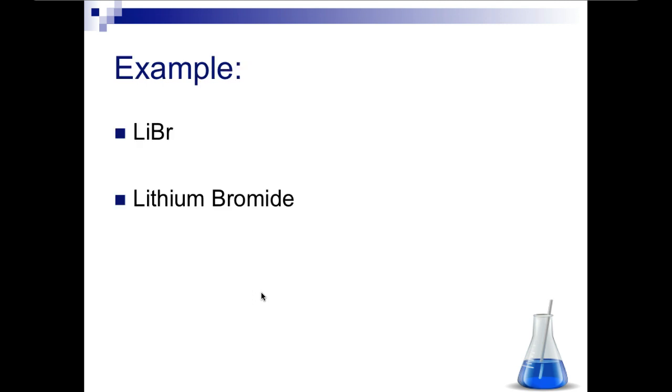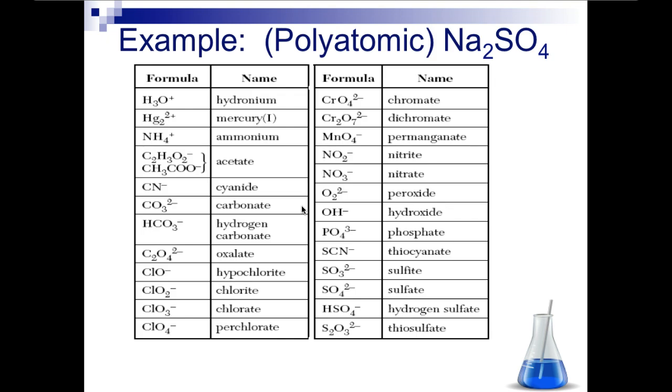The easiest way to explain this is to do some practice problems. We have this compound LiBr. Li off your periodic table is lithium, so you write lithium first. Then Br is bromine, but based on our rules, we write down the first syllable of the element, bromine, which is 'brom,' and then we add '-ide' to the ending. So LiBr is the formula for lithium bromide.